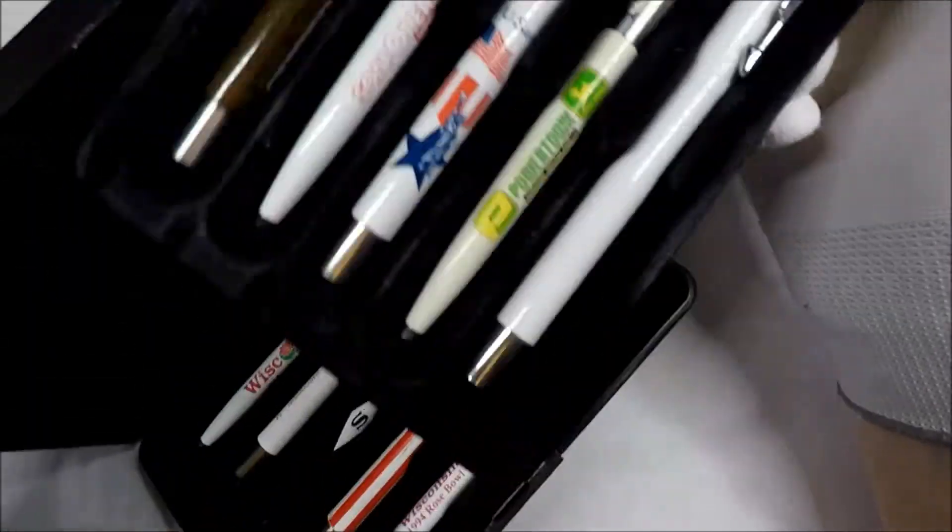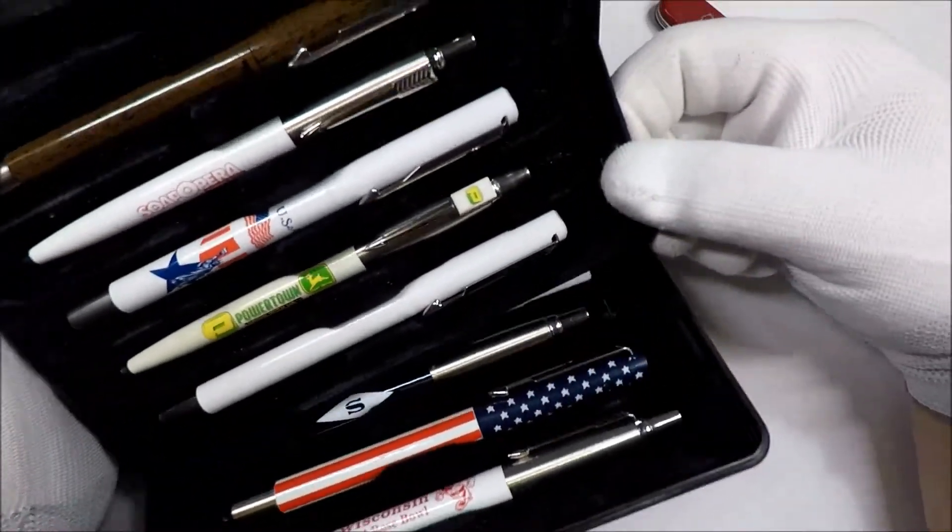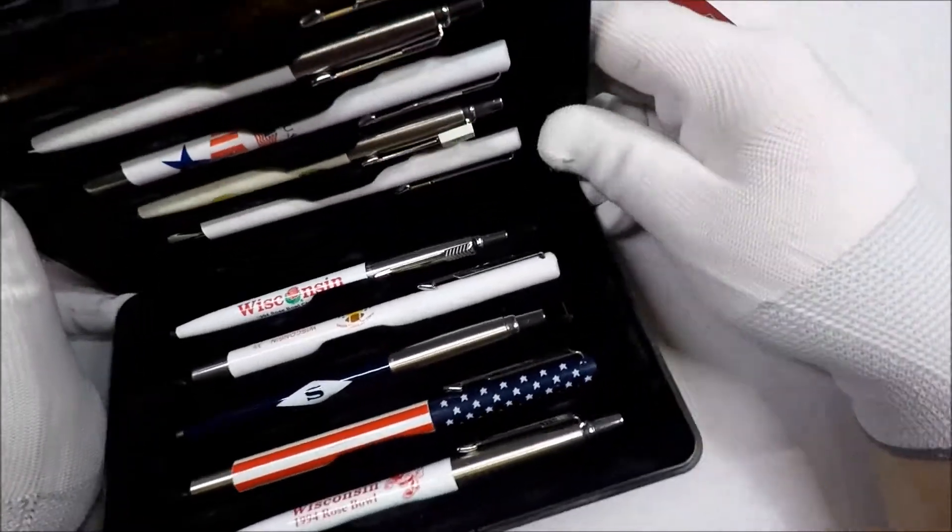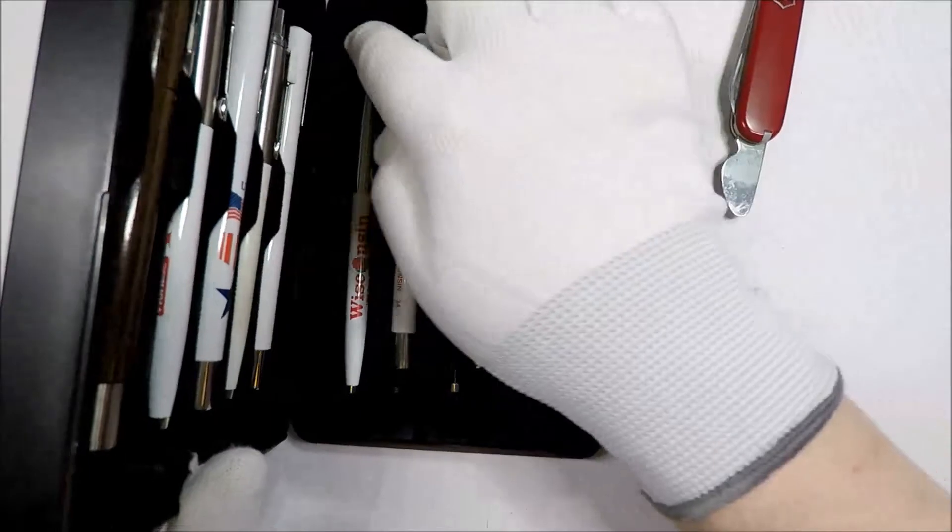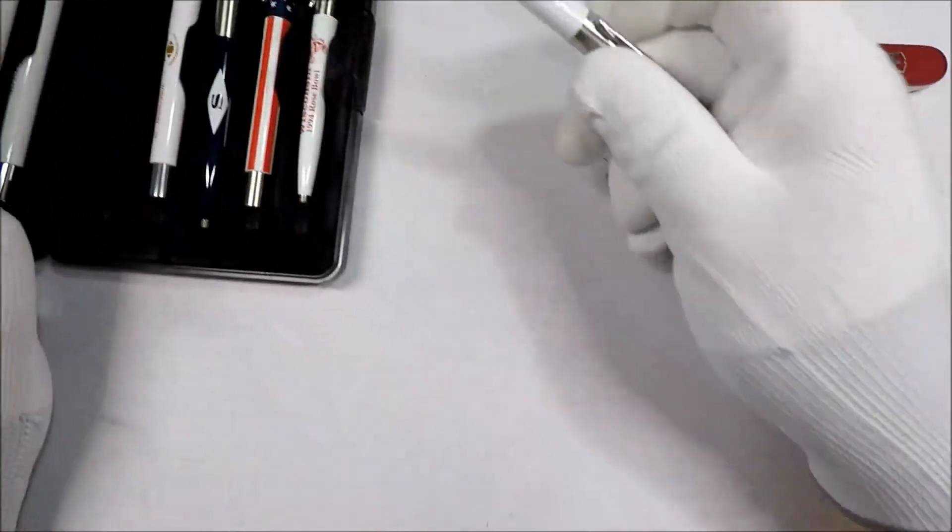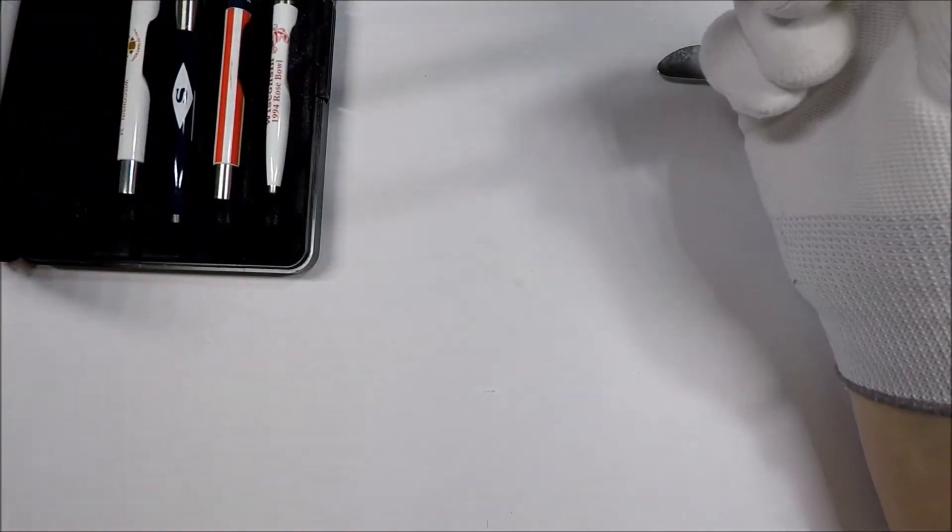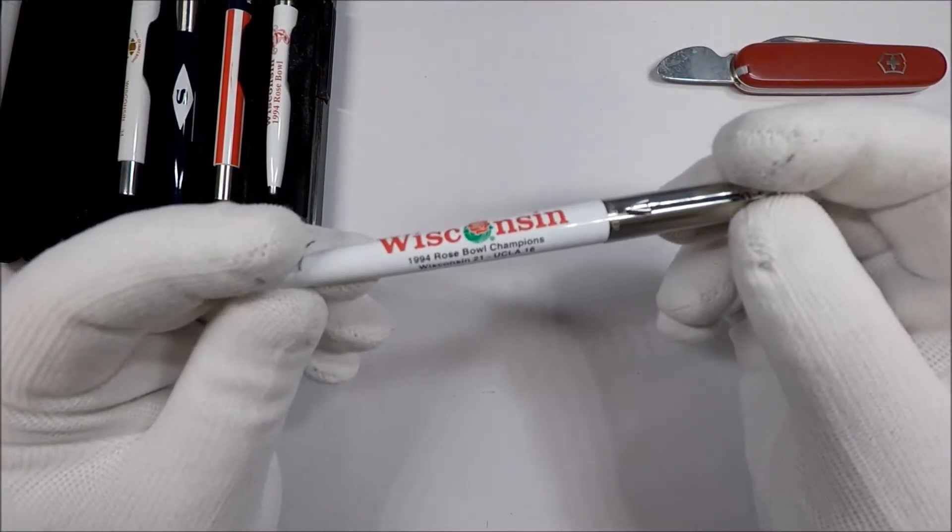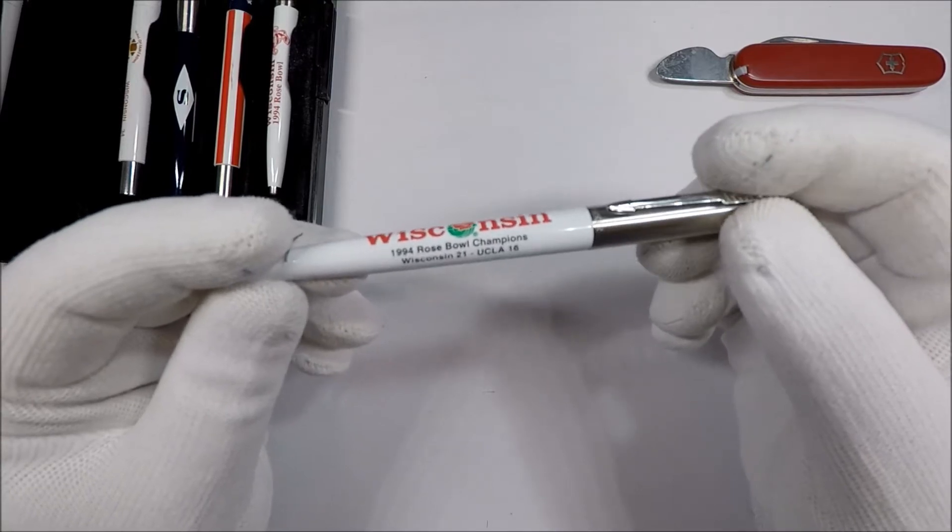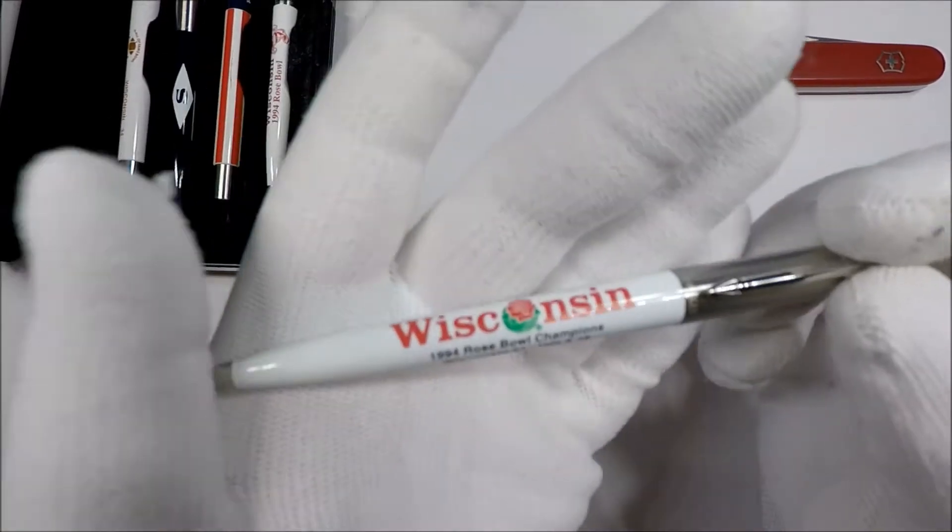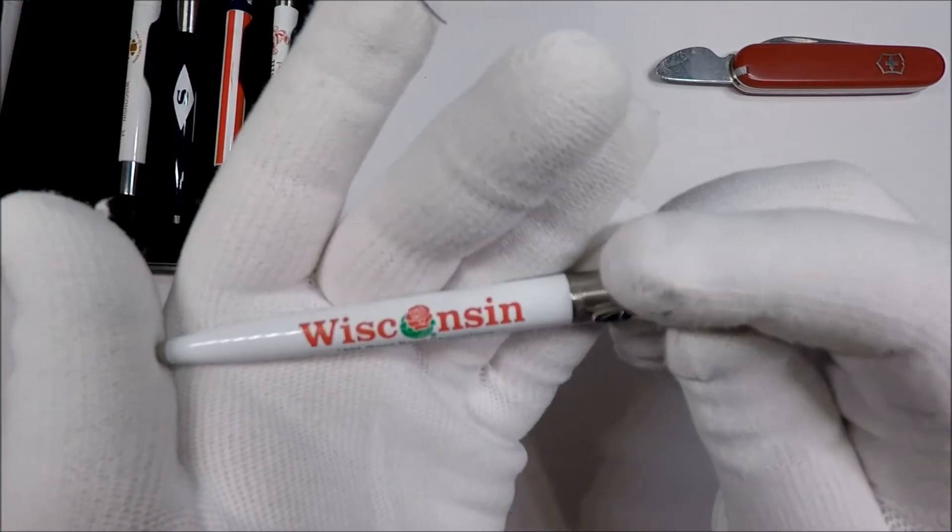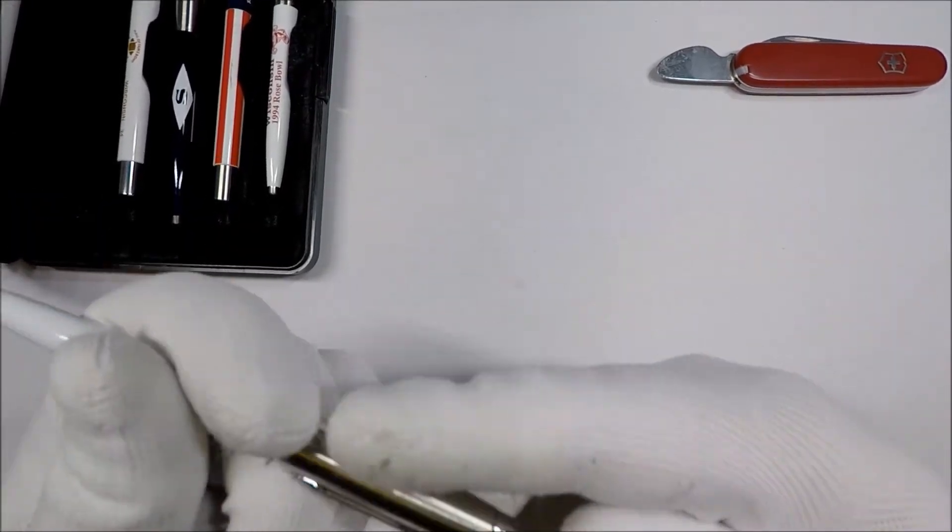So based upon that, it is my hope that we're going to get a Parker advertising pen, a Jotter advertising pen. Wisconsin 1994 Rose Bowl Champions. Well, one kind of interesting thing is that sort of will give us a general date on this particular set, being in the 90s. Kind of neat.